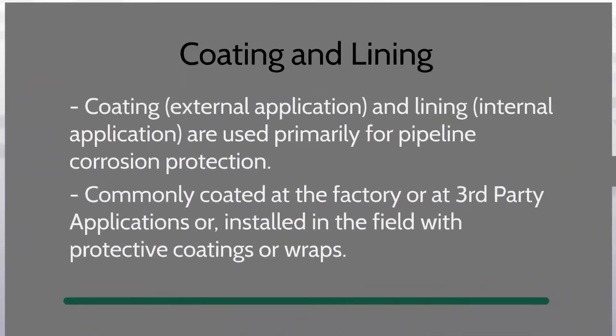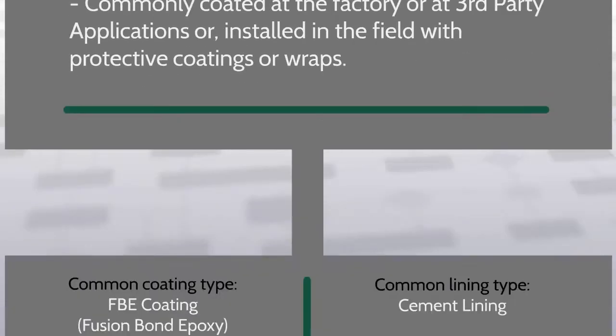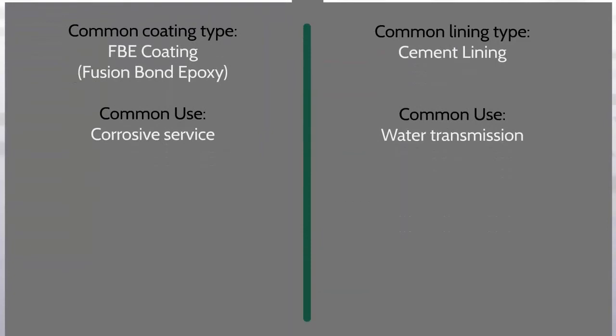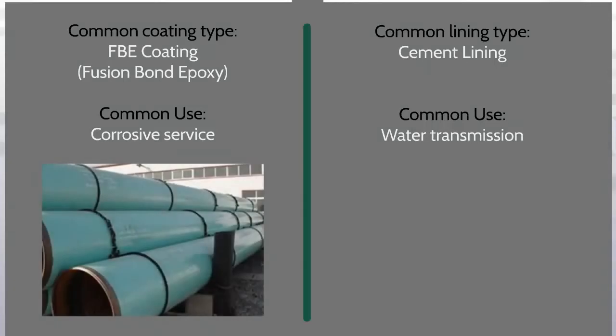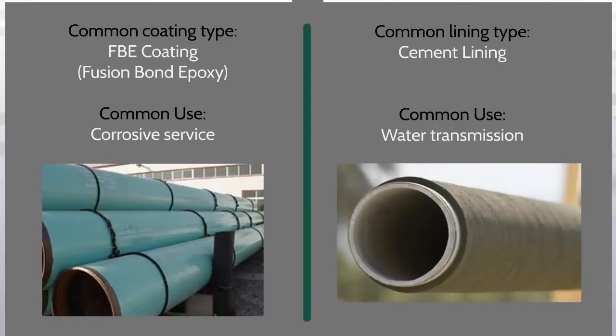Coating and lining: coating, an external application, and lining, an internal application, are used primarily for pipeline corrosion protection. Commonly coated at the factory or at a third party, or installed in the field with protective coatings or wraps. A common coating type is fusion bonded epoxy coating, or FBE, commonly used for corrosive service. A common lining type is cement lining, commonly used for water transmission.